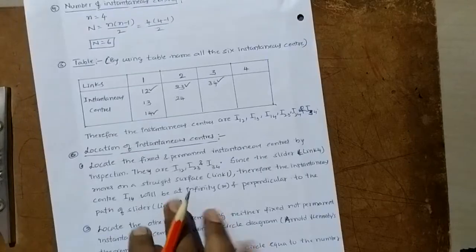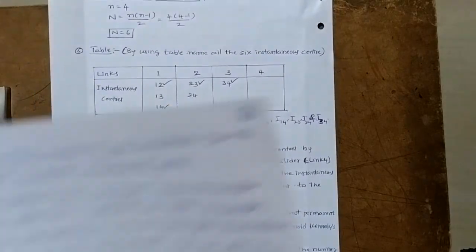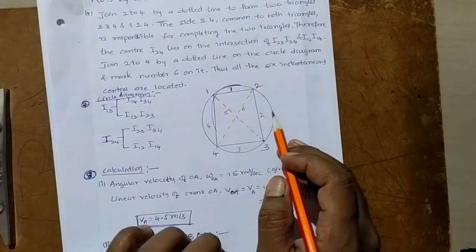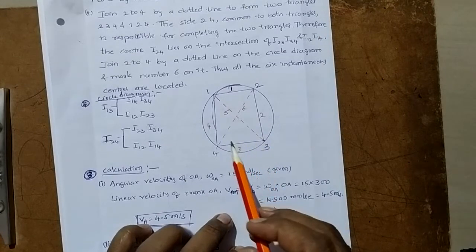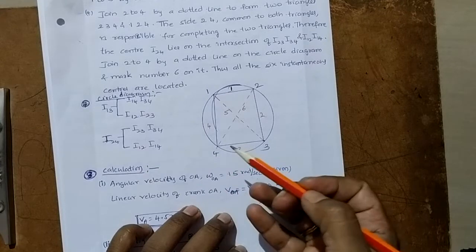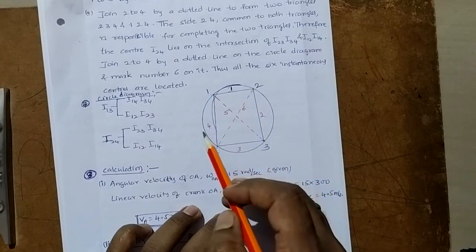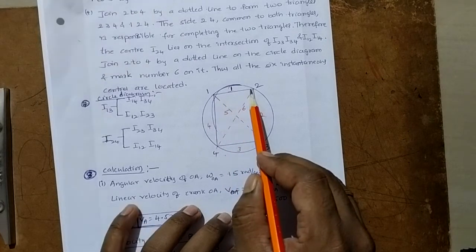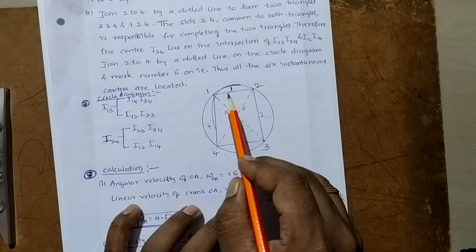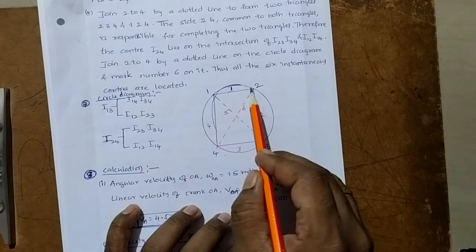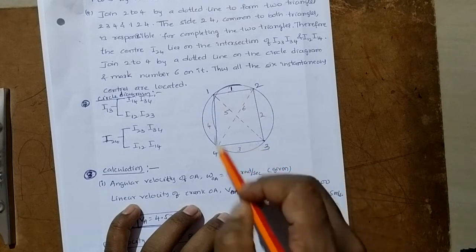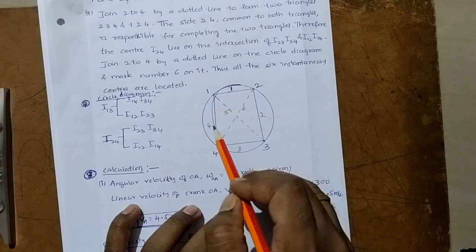With the help of Kennedy's circle, we can locate I13 and I24. Draw one circle and mark the link numbers 1, 2, 3, 4 on the circle. Join 1 and 2 with a solid line — this represents instantaneous center I12. Then join 2-3, 3-4, 4-1, and 1-3 with solid lines, each line representing an instantaneous center. That gives 4 instantaneous centers from the solid lines.